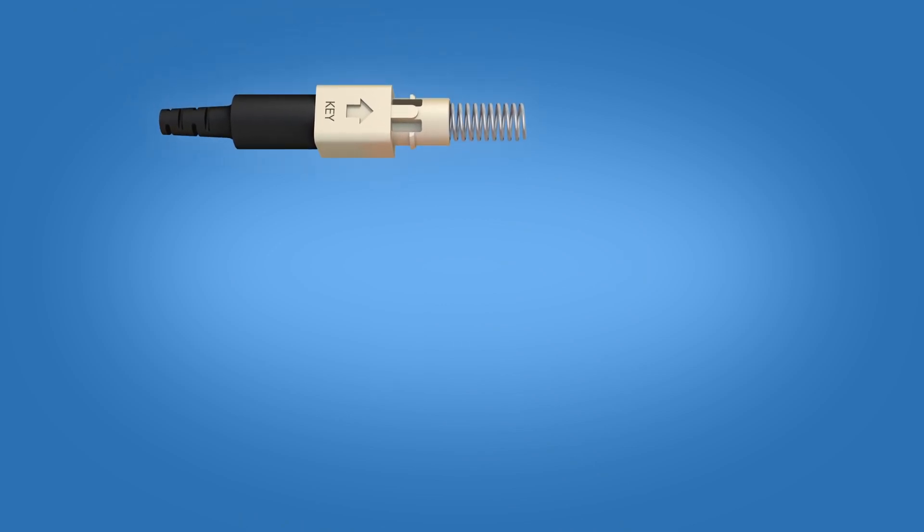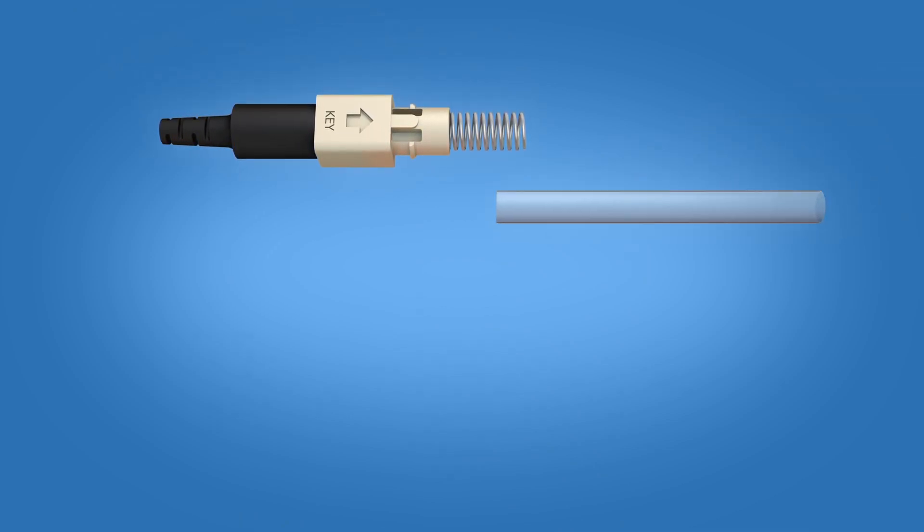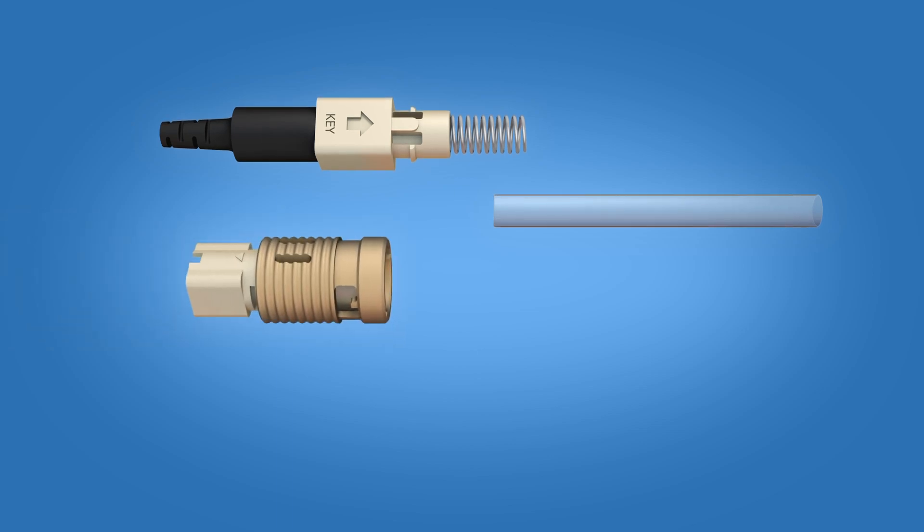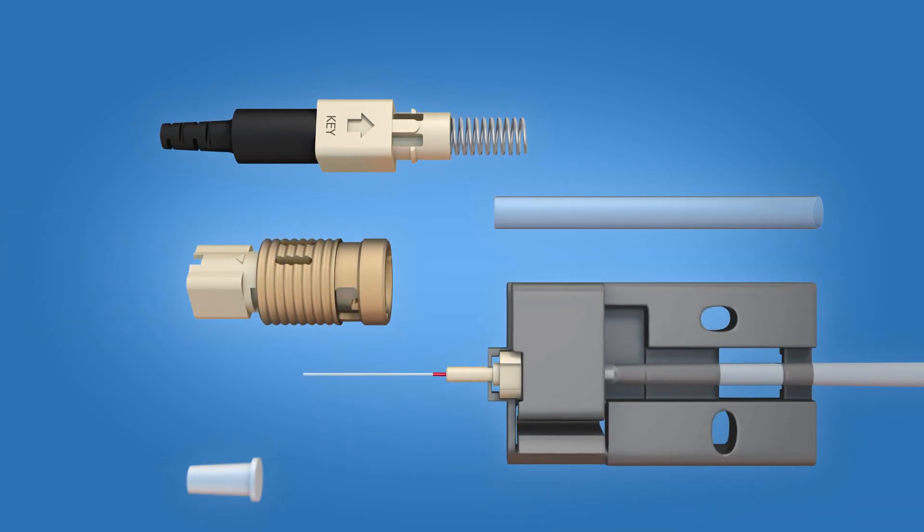The ST Fuse Connect connector includes the following materials: a boot unit, a protective sleeve, connector housing, a ferrule unit, and a dust cap.